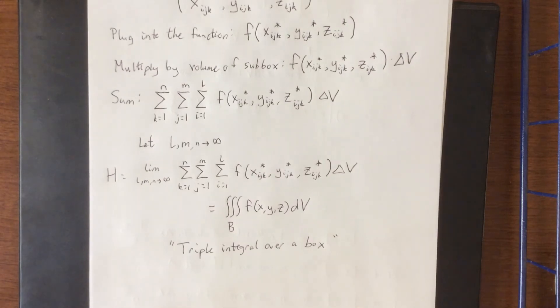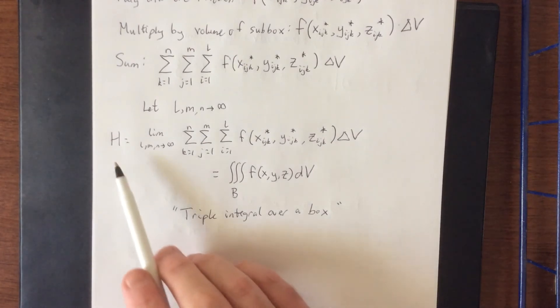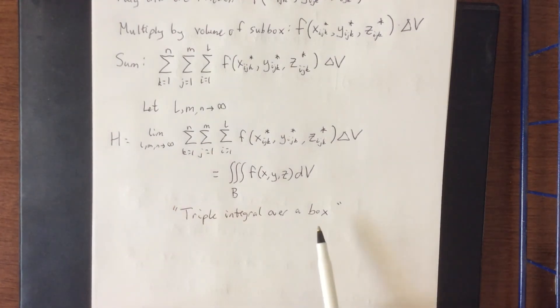So this is the triple integral over a box. This is analogous to a double integral over a rectangle. Now when we started talking about double integrals over general regions, we had type 1 and type 2 regions, depending on whether x was a function of y or y was a function of x. Here we're going to have three different types, whether z is a function of x and y, y is a function of x and z, or x is a function of y and z, but let's not get too far ahead of ourselves. So again, this represents a hypervolume, which is why we use capital H to describe it, and if you take a look at all of the letters that we've used in here, there are really not a whole lot of letters left at this point.